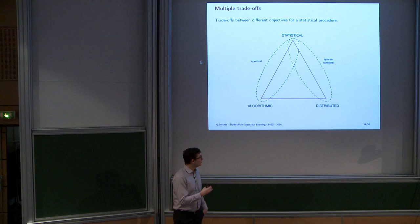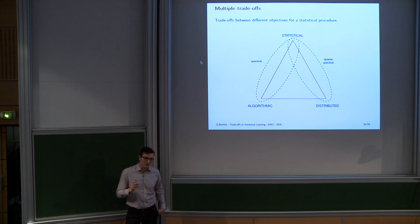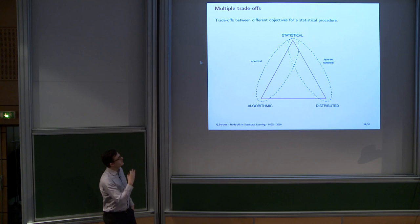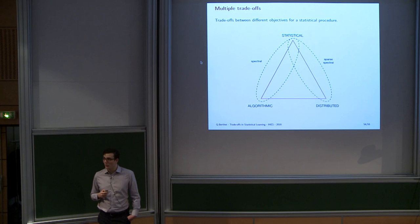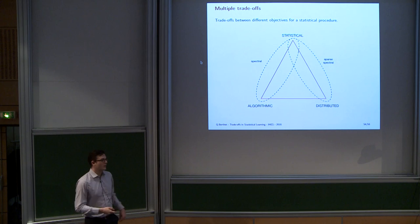The big-picture message is that when we look at statistical problems and want to add something to our statistical procedures, these properties should not be considered individually — we should consider all of them at the same time. Otherwise, we'll face multiple trade-offs. This is why the title of my talk was 'trade-offs, plural.' In statistical learning, we can have impossibility results when we want to have many properties simultaneously.